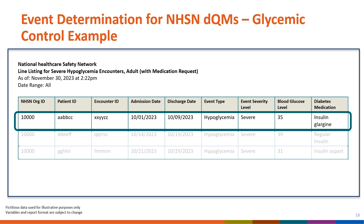This slide is meant to provide a more realistic view of how this example may appear in the NHSN application as a line listing report for the primary metric of the glycemic control DQM. Here we can see the necessary information used in determining whether an event took place. Up next, Monica will pick up to discuss the NHSN DQM analysis reports.